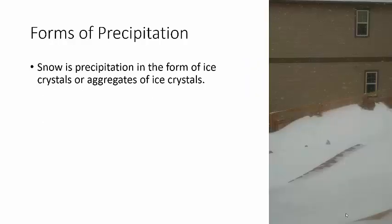Snow is precipitation in the form of ice crystals. Remember we talked about the Bergeron process — snow is ice crystals. You can see my backyard, and that is a six-foot-high fence. That was in Colorado, obviously not in Tampa.